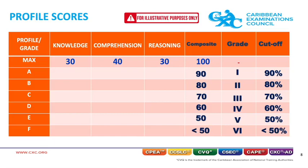Now that we have established the maximum score for each profile (max row) and the cut-offs for each grade (composite, grade, and cutoff columns), we need to complete the table by establishing the minimum for each profile grade. For the knowledge profile, profile grade A has a minimum of 90% × 30 — the cut-off associated with grade 1 times the profile max — equal to 27.